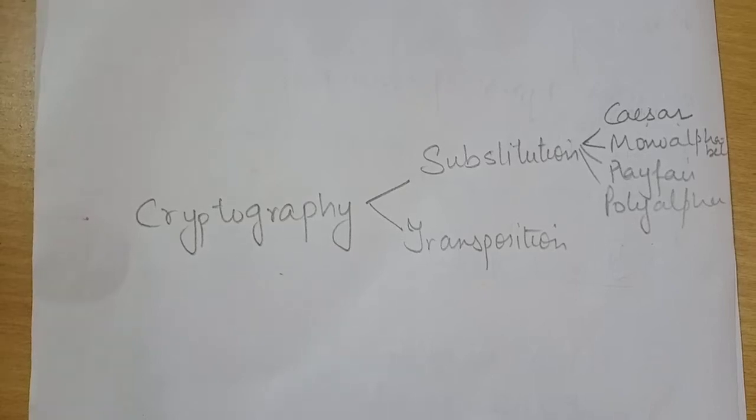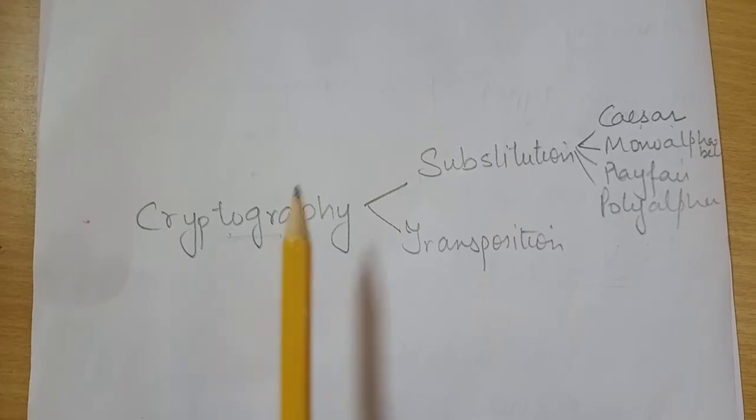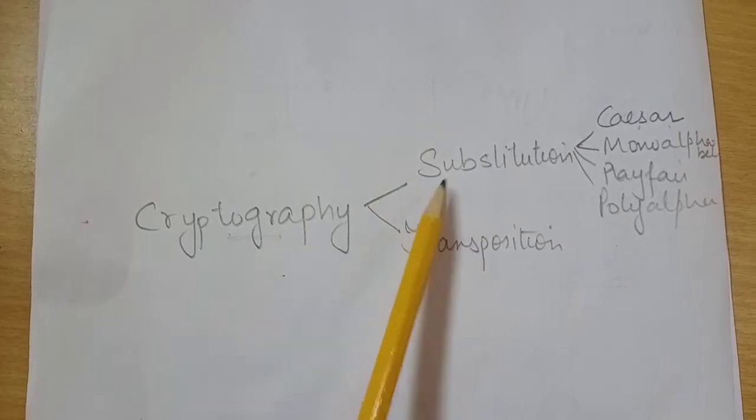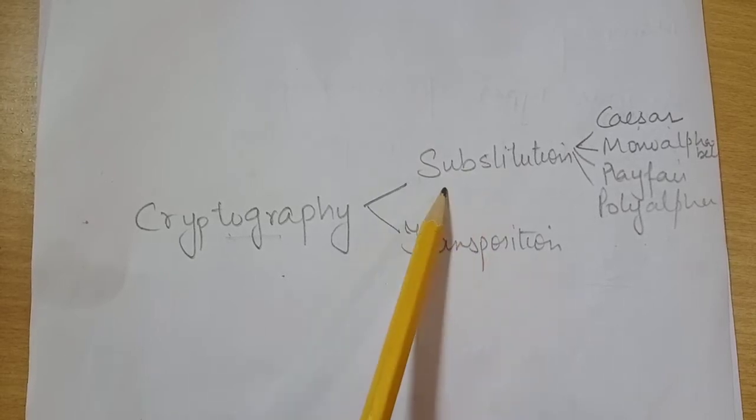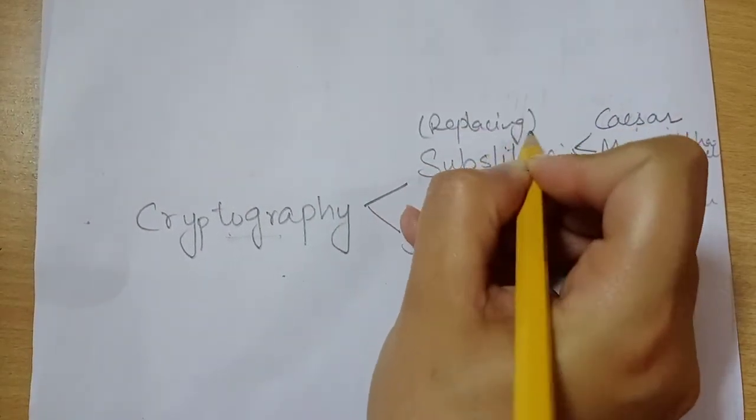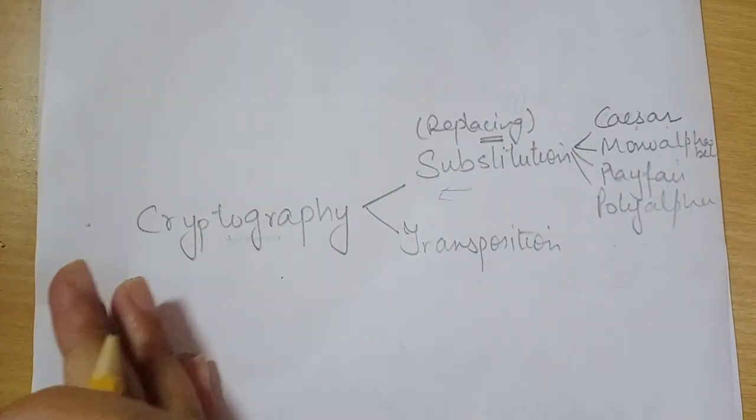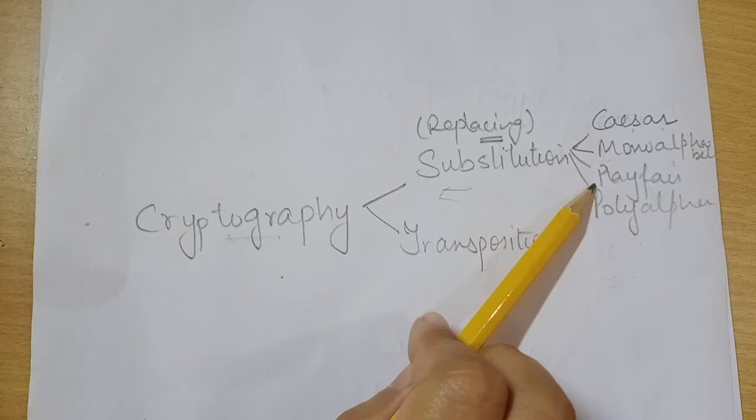In this video we'll do another technique of cryptography. As I have told, cryptography is divided into two types if we consider the technique used for encryption. First is substitution - in this case we are replacing, substitution means replacement of the plain text with a new one. We have done four techniques: Caesar, monoalphabetic, playfair, and polyalphabetic.